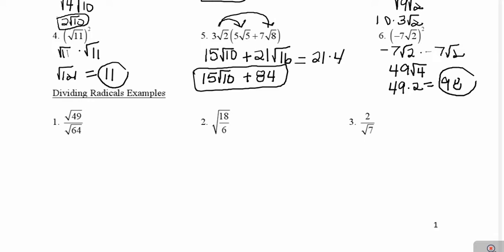The nice thing about example 1 is I have two perfect square numbers. The square root of 49 comes out to be a whole number 7, and then the square root of 64 comes out just to be 8. So now I've gotten rid of the square root in the denominator and I've simplified my answer. The final answer is 7 over 8.